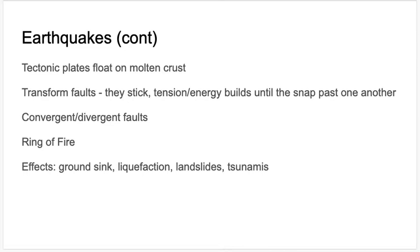Earthquakes can cause land to move or drop — ground sink is when the land just drops. Certain soils with high water content can actually liquefy, a process called liquefaction, which causes buildings to collapse. You can also get landslides, especially in areas without good tree coverage to hold soil in place, as well as tsunamis and flooding. Sometimes rivers are redirected as a result of land changes due to the earthquake.